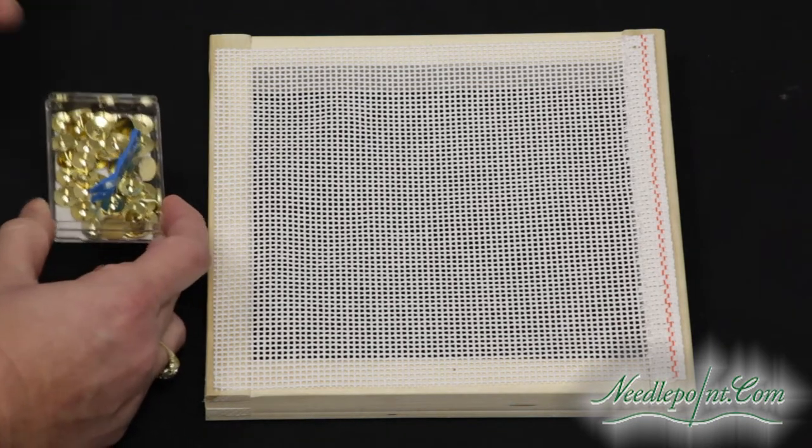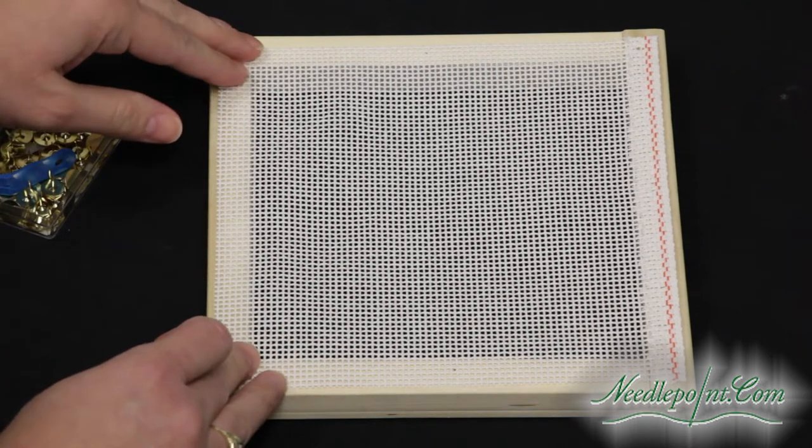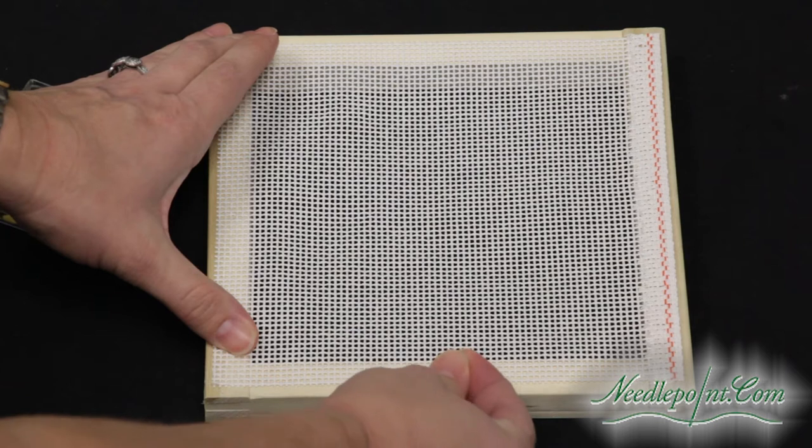Begin by opening your tacks. Place your first tack on the bottom portion of the frame. Be sure to push the tack completely into the wood.